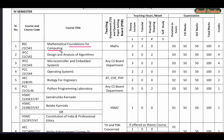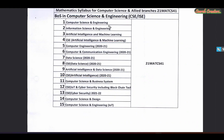So, in this subject — the third branch is Artificial Intelligence and Machine Learning. The fourth branch is Computer Science, Artificial Intelligence and Machine Learning. The fifth branch is Computer Science and Engineering. The sixth branch is Computer Science Communication Engineering.